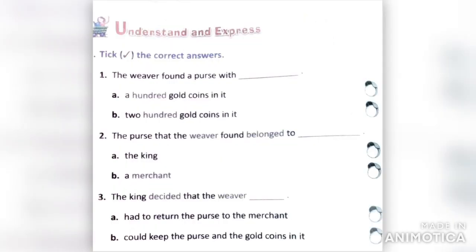Today we'll start with the exercises. Our first exercise is to tick the correct answers. We have been given two options and we have to tick the correct one. The first sentence is: the weaver found a purse with — a hundred gold coins in it, or two hundred gold coins in it. The answer is the first option: a hundred gold coins in it.